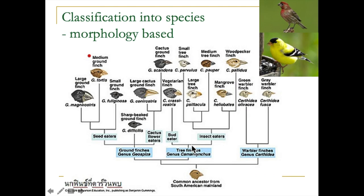The birds Darwin studied were finches. They had a common ancestor, but as they separated onto small islands, each group evolved differently over a long time until they became new species. We use Darwin's ideas in taxonomy today.